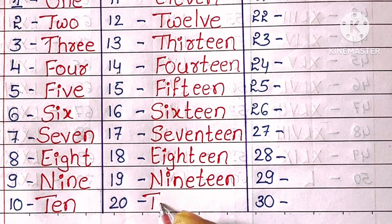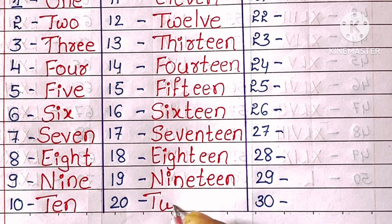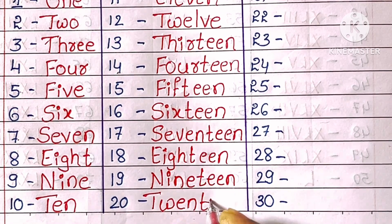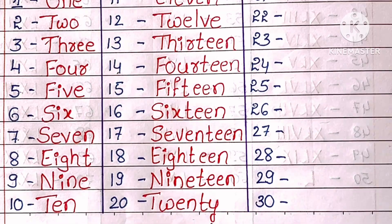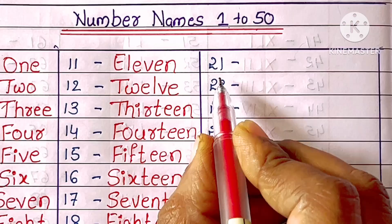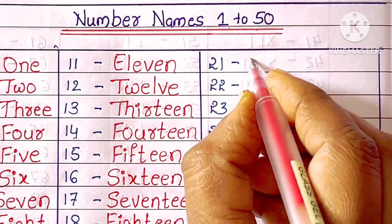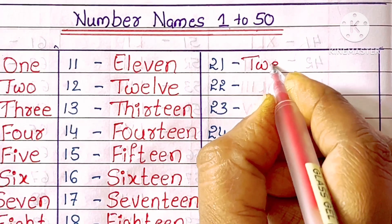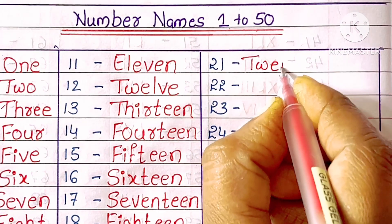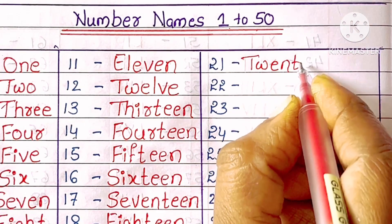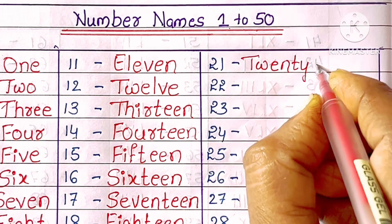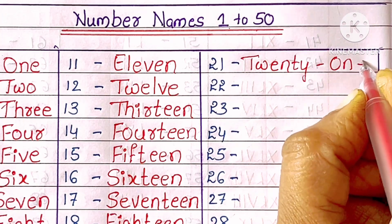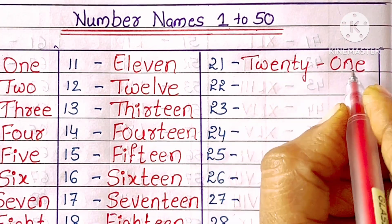20. T-W-E-N-T-Y. Twenty. 21. T-W-E-N-T-Y-O-N-E. Twenty-one.